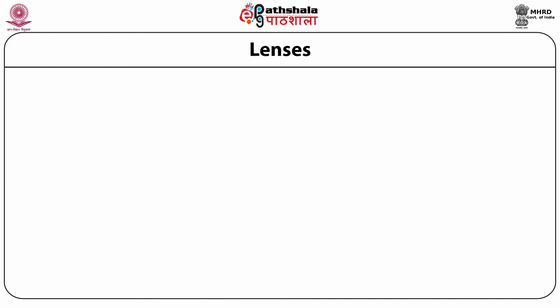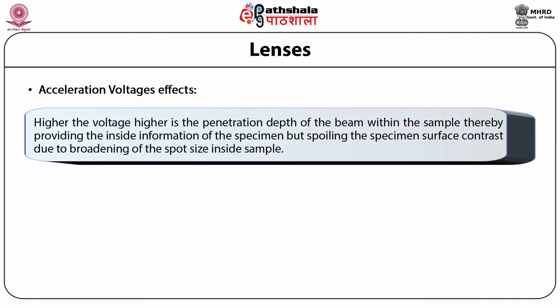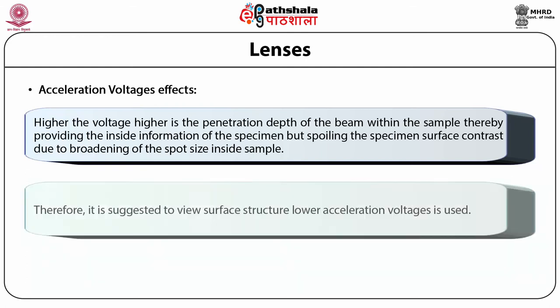Let us now discuss about the acceleration voltage effects. Higher the voltage, higher is the penetration depth of the beam within the sample, thereby providing inside information of the specimen but spoiling the specimen surface contrast due to broadening of the spot size inside the sample. Therefore, it is suggested that to view the surface structure, a lower acceleration voltage should be used.